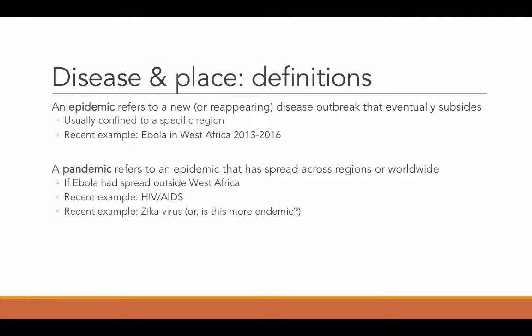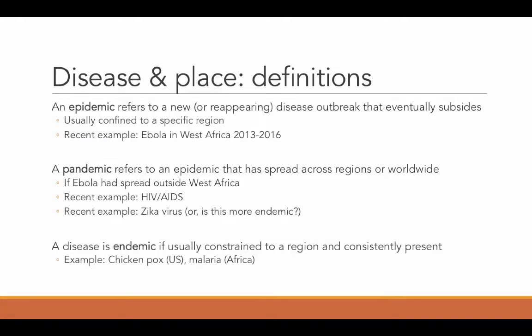Zika was declared a pandemic because it came to the United States and other countries from people who had been traveling in affected areas. However, if that had not happened, it would be more of an example of an endemic — the third type of disease — because endemics are usually constrained to a region and consistently present. Unlike an epidemic where there's an outbreak and then it goes away, when a disease is endemic to a region it stays there continually. Because mosquitoes are continually present, there is always a risk of Zika in South America and the Caribbean. It became a pandemic when it spread overseas. Other examples of endemics include chickenpox in the United States and malaria in Africa.